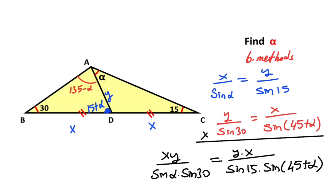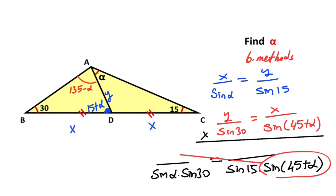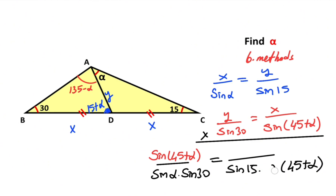If you simplify the expression, and move the terms, we get: sin(45° + alpha) over sin(alpha) equals sin(30°) over sin(15°). We can write 1/2 instead of sin(30°).